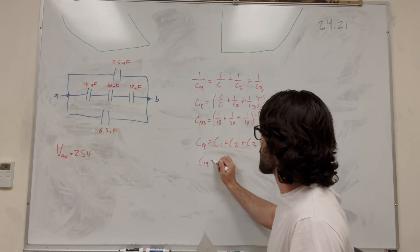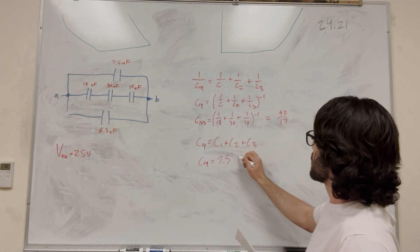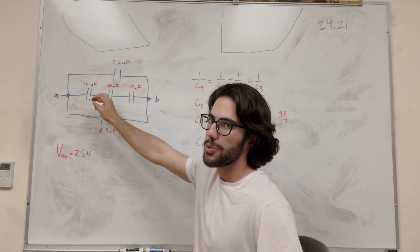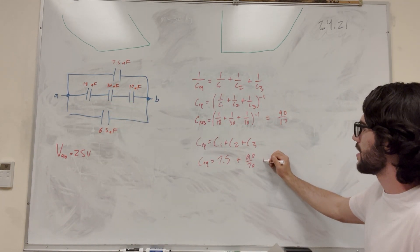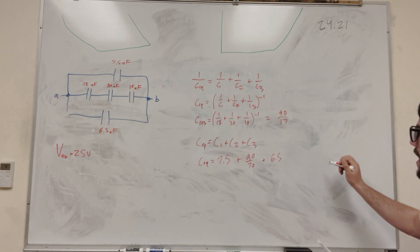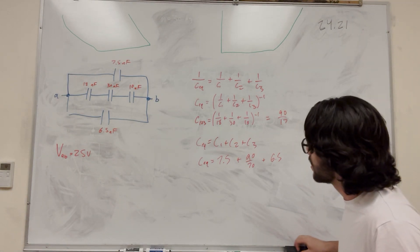So then C equivalent is just going to be equal to the top one, 7.5, plus 90 over 17, which is the equivalent capacitance of this series. We basically just combine this into one capacitor, so we can put that there, and then the bottom one is 6.5. And we're going to get that C equivalent is equal to 19.3 nano-farads. So that's part A.